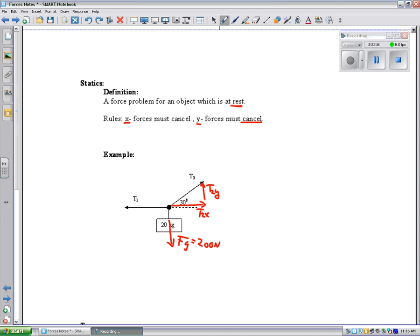Now, when I do this, I'm going to use sine and cosine, and for the T2y, that's the opposite side of this triangle from the 30, so I'll use sine for that one. X is the adjacent side, so I'll use cosine.